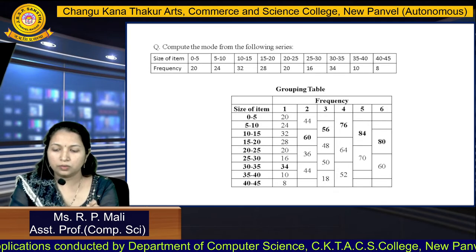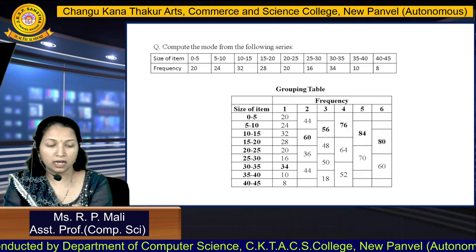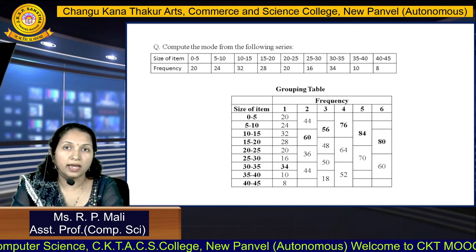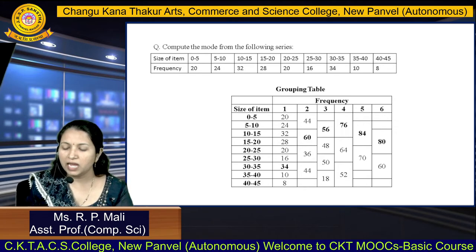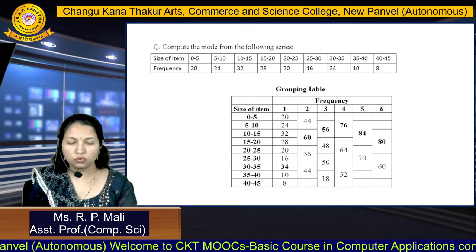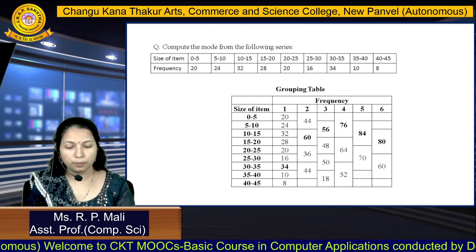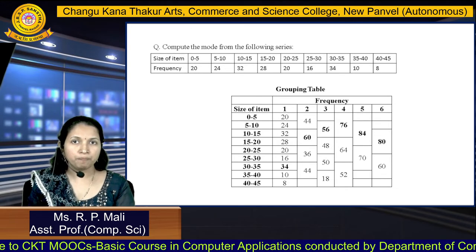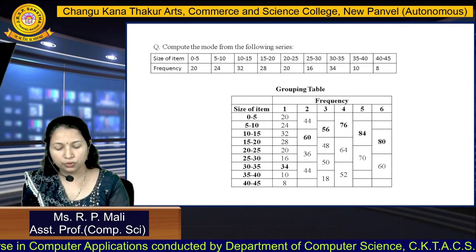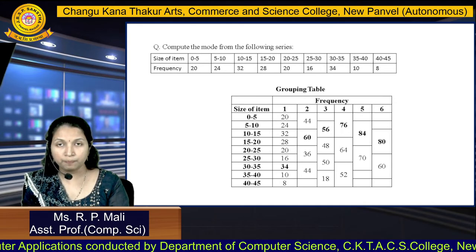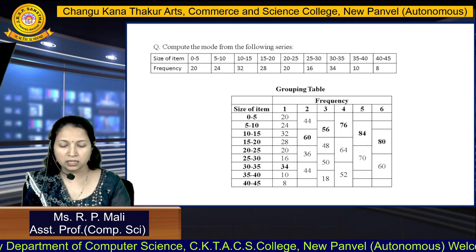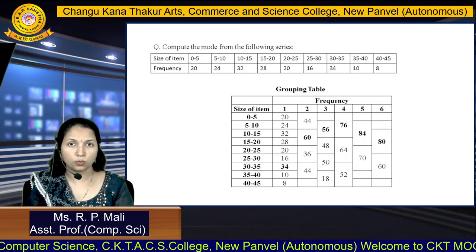This is the given data for your continuous series. We have size of item and frequency. The classes are 0 to 5, 5 to 10, 10 to 15, 15 to 20, and likewise. The respective frequencies are 20, 24, 32, 28, and likewise. First, we prepare the grouping table with 6 columns. In the margin, write the size of items which are the classes: 0-5, 5-10, 10-15, 15-20, and so on. In the first column, write the frequencies as they are: 20, 24, 32, 28, 20, 16, and likewise.